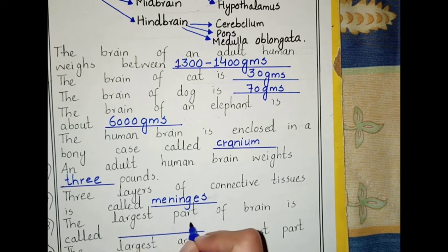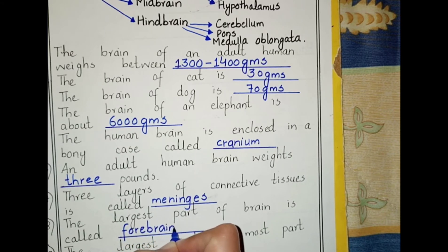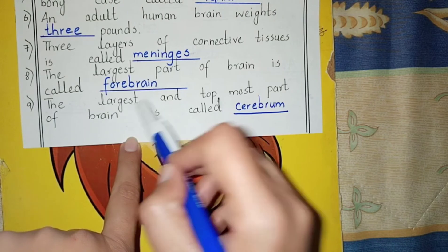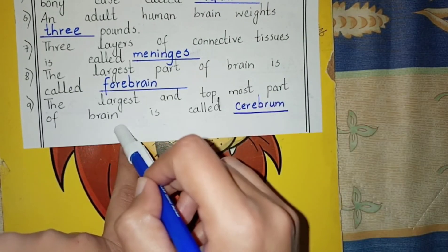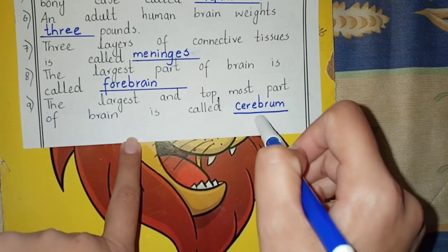The largest part of the brain is called the forebrain. As we know, the brain is divided into three parts: forebrain, midbrain, and hindbrain. The largest one is the forebrain. The forebrain is further divided into cerebrum, thalamus, and hypothalamus. The largest and topmost part of the brain is called the cerebrum.